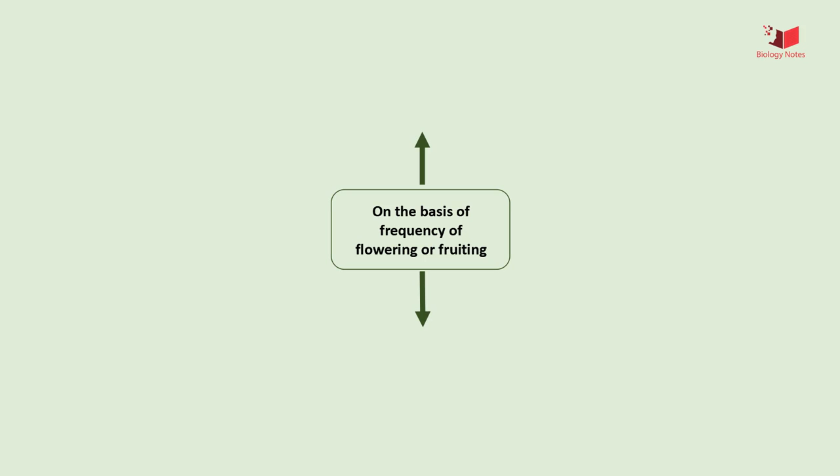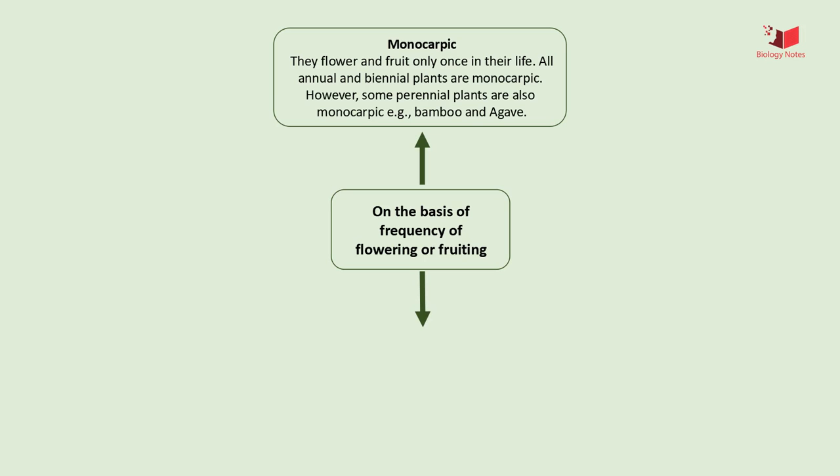Classification of flowering plants on the basis of frequency of flowering or fruiting is divided into two parts: monocarpic and polycarpic. Monocarpic plants flower and fruit only once in their life. The term monocarpic was first used by Alphonse de Candolle. Monocarpic plants are those that flower, set seeds, and then die. Some monocarpic plants can be kept alive if the flowers are removed before seed formation begins, or if the flower buds are removed before they begin blooming. All annual and biennial plants are monocarpic. However, some perennial plants are also monocarpic — for example, bamboo and agave.